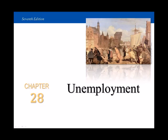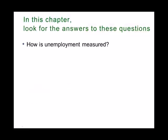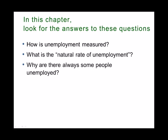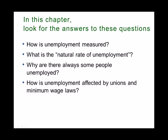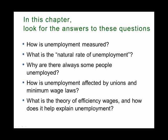Hello class. Today we're going to work on chapter 28. It's a relatively short chapter that basically explains unemployment and how we measure the unemployment rate. We're going to see how unemployment is measured, what is the natural rate of unemployment, and why there are always some people unemployed. We'll also look at how unemployment is affected by unions and minimum wage, and we'll cover the theory of efficiency wages.